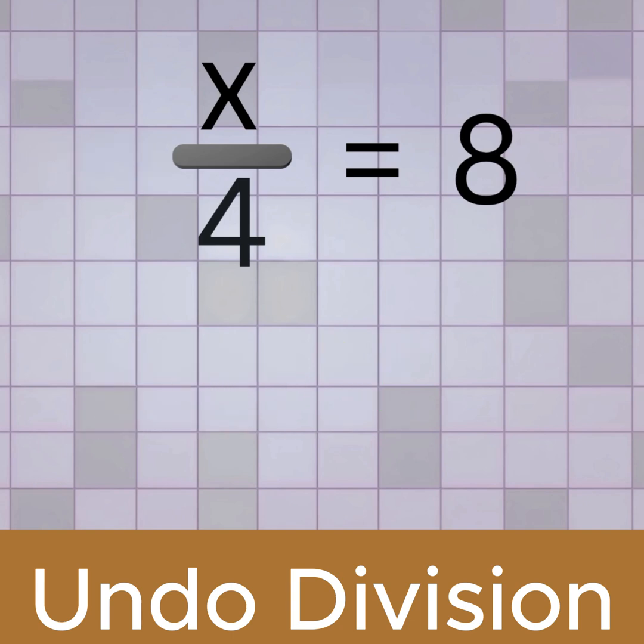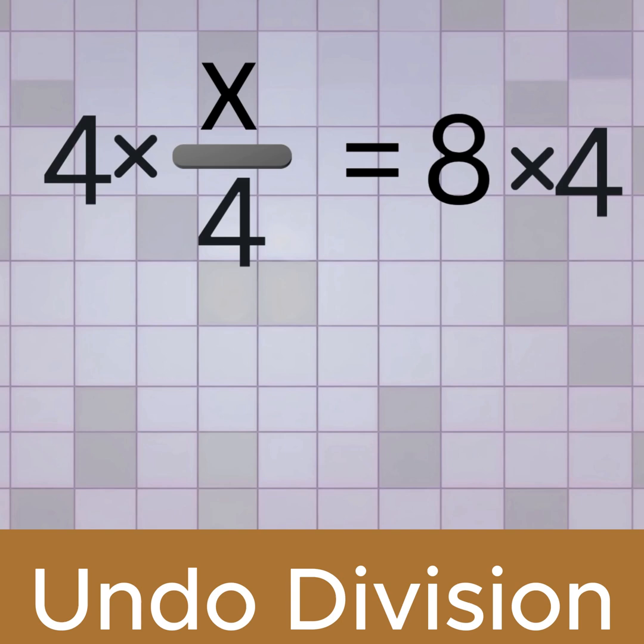So we multiply both sides of the equation by 4. And instead of using the multiplication sign, we'll use parentheses.